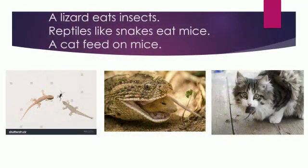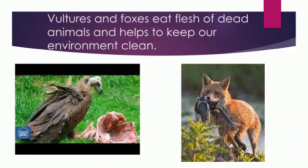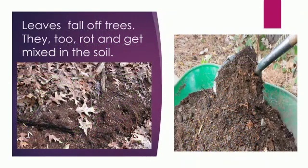Now let us see how living things have an effect on the environment. A lizard eats insects. Reptiles like snakes eat mice and lizards. A cat also feeds on mice. This prevents the loss and damage to crops caused by mice in the field. Vultures and frogs eat the flesh of dead animals and help to keep our environment clean. The remains of dead animals mix with the soil. Even fallen leaves of trees decompose and mix with the soil, which increases the fertility of the soil. Fertile soil helps plants to grow healthy. In this way, living things can bring about a change in non-living things.